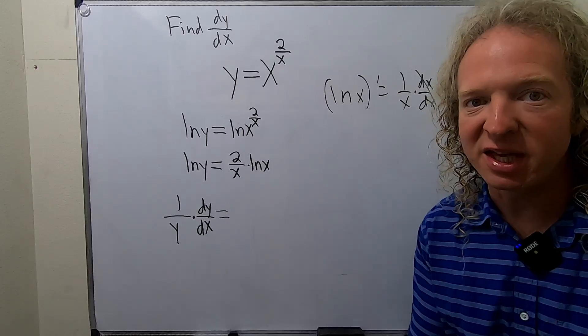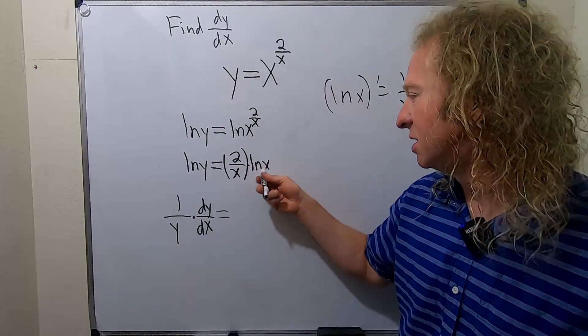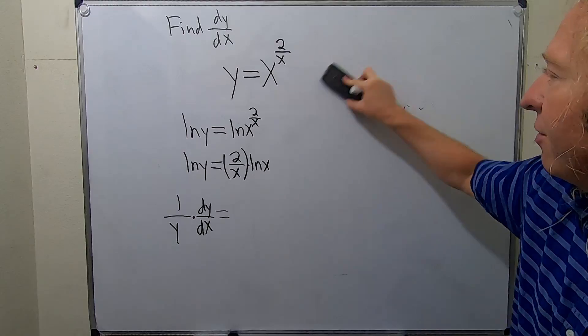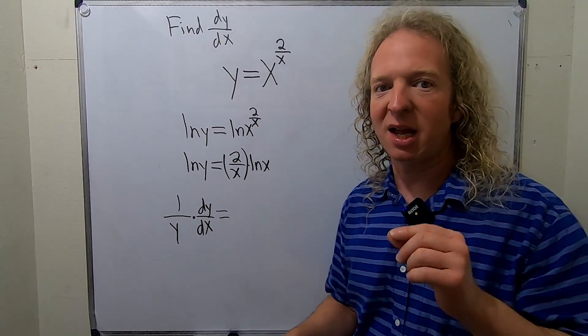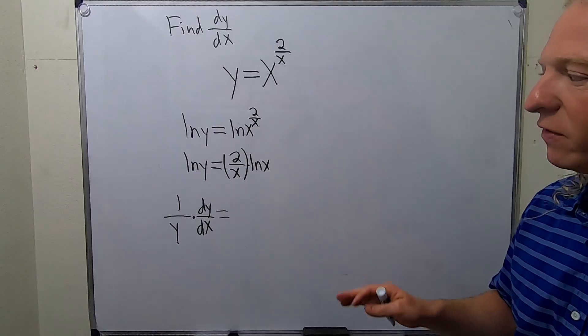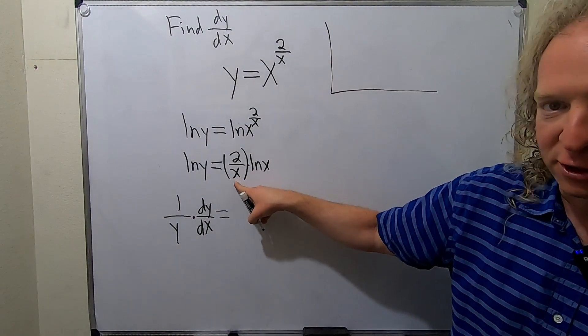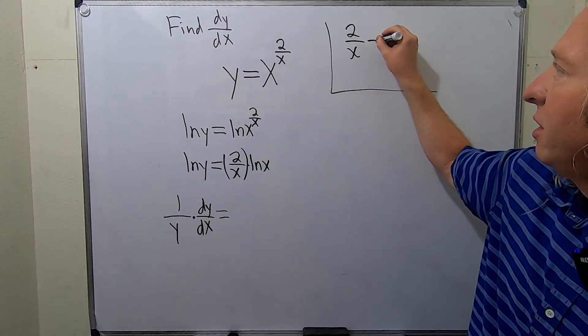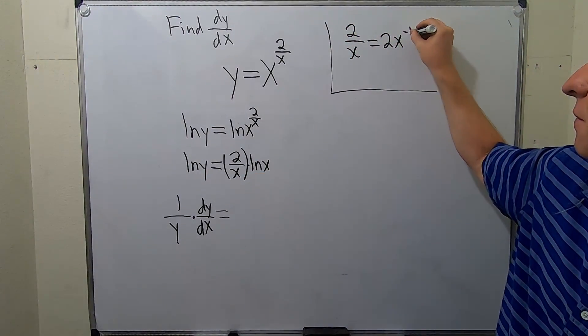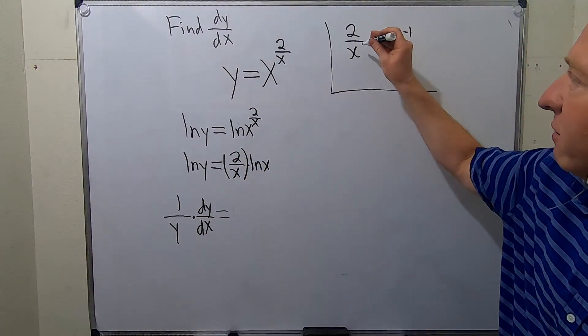Here we're going to use the product rule. So I'm going to think of this as the first piece, and this is the second piece. Now, I have the derivative of 2 over x memorized. I remember the day I decided I'm going to memorize what the derivative of 1 over x is. So I'm going to do it up here on the side for you. So we have to take the derivative of the first piece. So what you do is you can rewrite it like this. You can bring that x upstairs and it becomes negative, the exponent does.